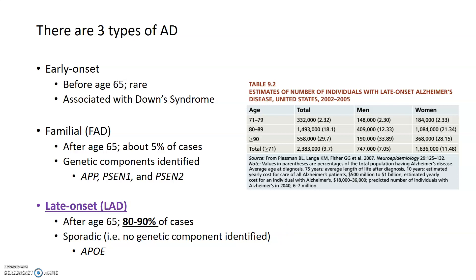There are three main types of Alzheimer's disease, all of which are characterized by the same set of symptoms, as well as the same brain pathology of amyloid plaques and neurofibrillary tangles. Really, the difference between these three types of Alzheimer's disease is when they occur.